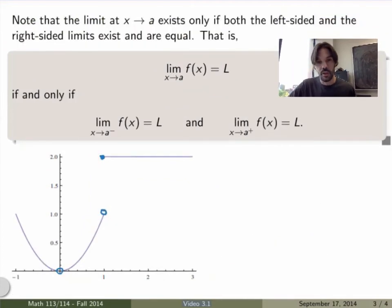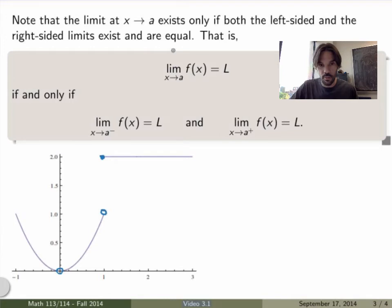So what's the relation now between the original definition of a limit and the one-sided limits? Well, it's pretty easy. So we say that the limit, the full limit, so without minus or pluses, so that the true limit at a point x equals a exists if and only if both the left-sided and the right-sided limits exist and are equal, they give exactly the same thing.